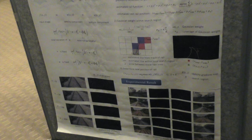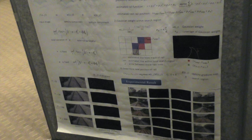We model the estimated rail using a 3D polynomial function and search neighborhood pixels using a Gaussian weight. We find the point that is the maximum value of this equation, which corresponds to the maximum value of the sketch component gradient.